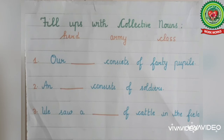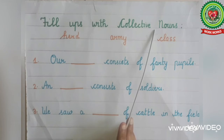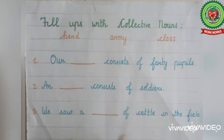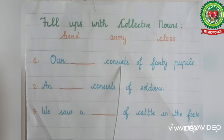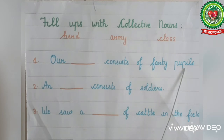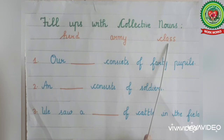Now in the second exercise you have to fill in the blanks with collective nouns. The options given are herd, army, and class. We will read the first blank: our dash consists of 40 pupils. As you know, class is a collective noun for the collection of pupils, so we will write class here.